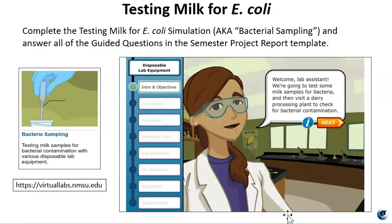What you'll need to do is complete the testing milk for E. coli simulation, also known as the bacterial sampling simulation. Be sure to make note of all procedural steps and test results, and make sure to answer all of the guided questions in the Semester Project Report template. The URL is found right here. Thank you for watching — don't forget to do the reading. Check the description below for more videos related to these topics, links, and leave your questions in the comments.